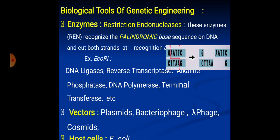Terminal transferase catalyzes the addition of nucleotides, converting blunt ends into sticky ends. The vectors are the molecular vehicles which transfer the gene of interest into the cell — into the bacterium or into the organism. They are mainly plasmids, bacteriophages, lambda phages, and cosmids. Plasmids are circular double-stranded DNA molecules present in the cytoplasm of bacteria.